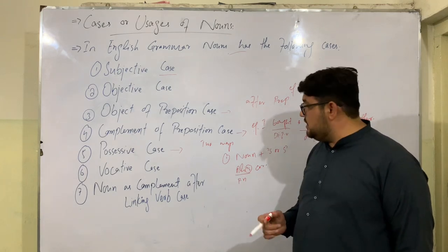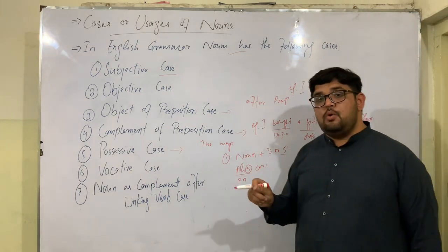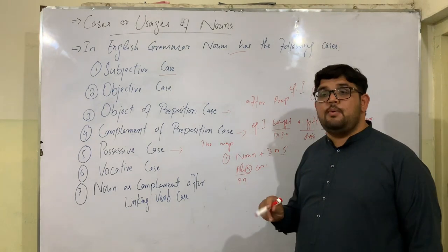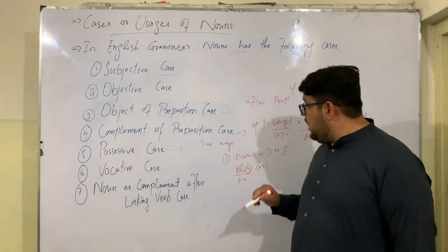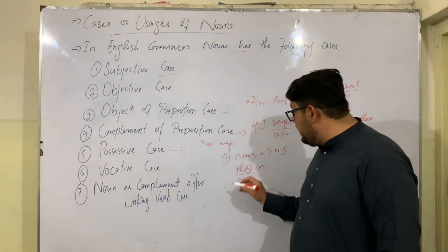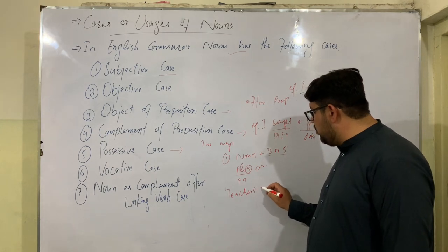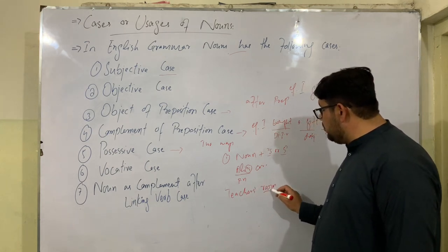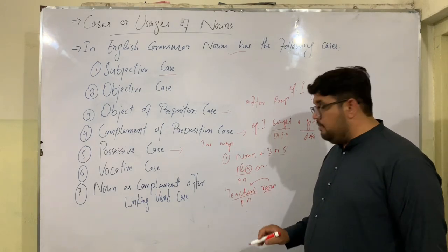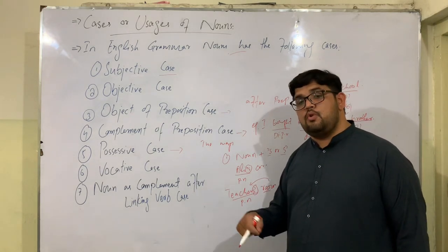In this case, a noun includes apostrophe-s for singular possession and s-apostrophe for plural possession. For example: 'teachers' room' means a room for all the teachers. Here the noun takes s-apostrophe, showing plural possession or ownership, making it a possessive noun.